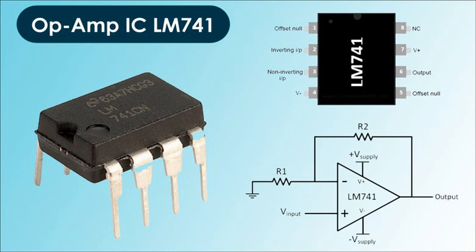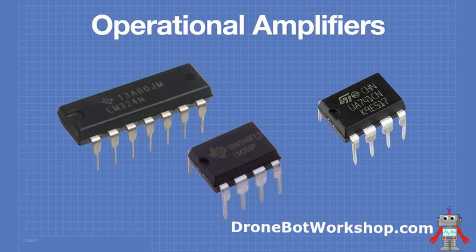MOSFET — metal-oxide-semiconductor FET. Types of MOSFETs: NMOS (N-channel MOS) where electrons are the majority charge carriers, and PMOS (P-channel MOS) where holes are the majority charge carriers. Basic structure: Gate — the terminal that controls the flow of current by applying an electric field; it is insulated from the semiconductor material by a thin oxide layer. Source — the terminal from which current enters the channel. Drain — the terminal through which current exits the channel.